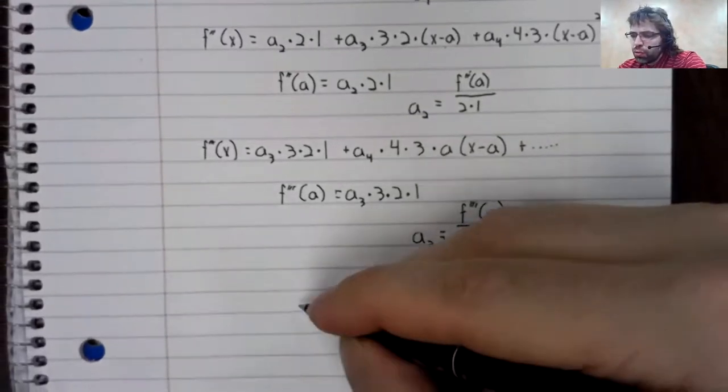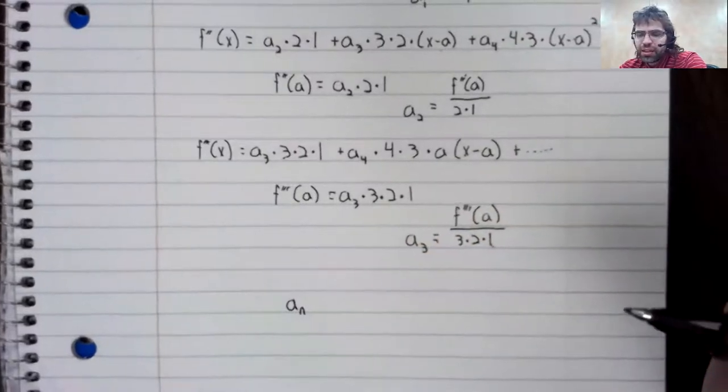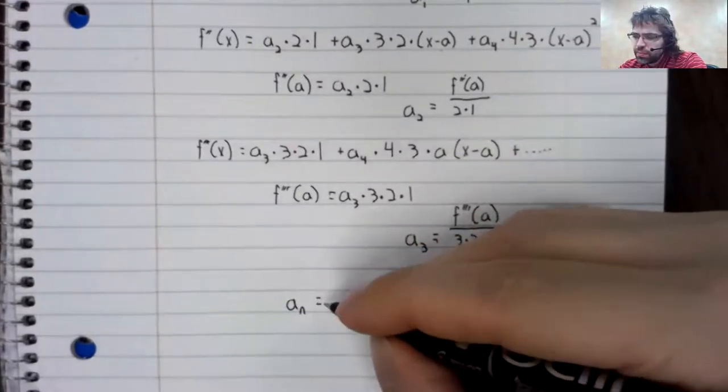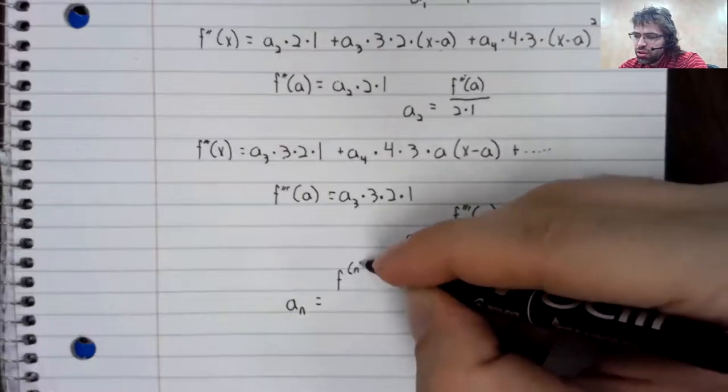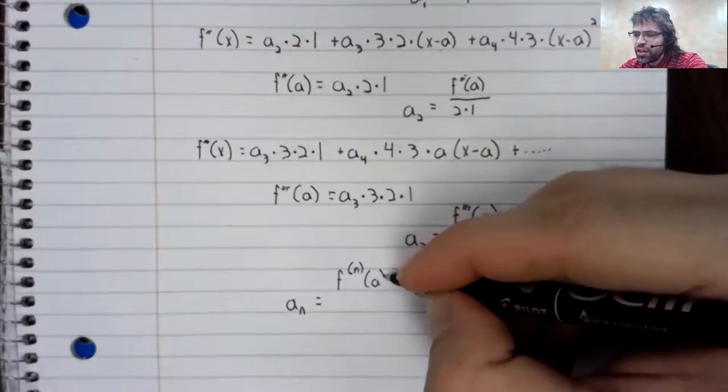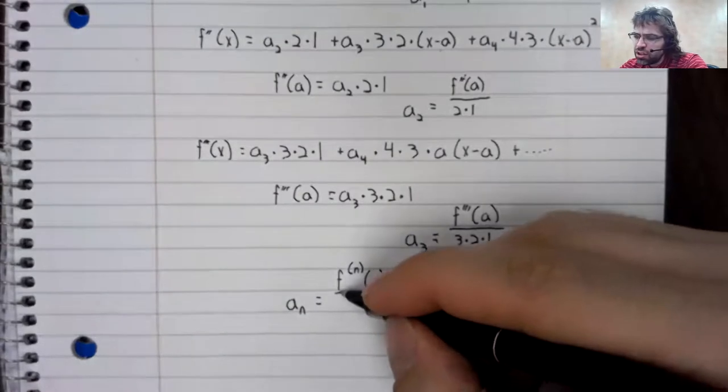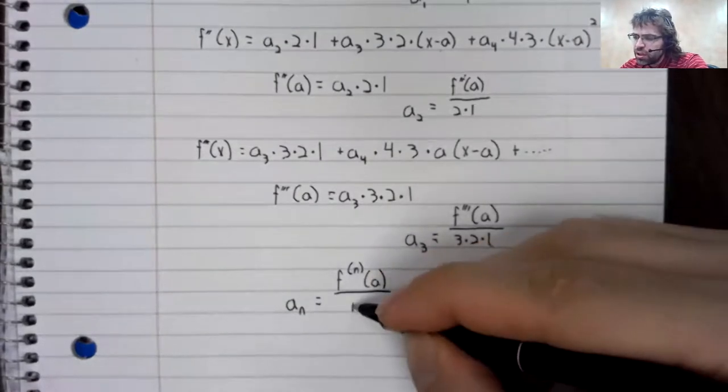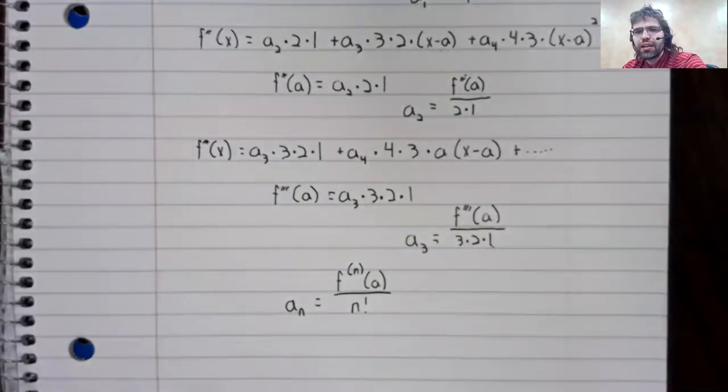In general, a sub n is the nth derivative evaluated at the center of the power series divided by n factorial.